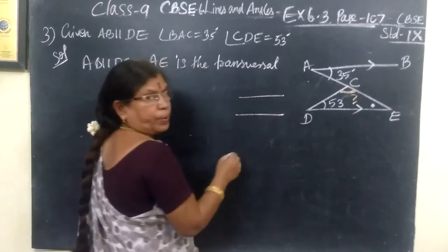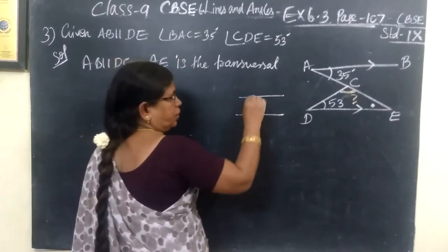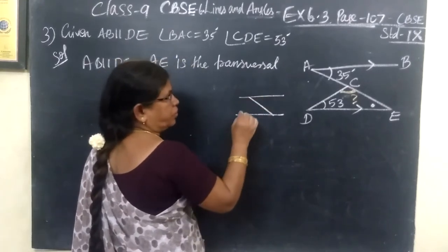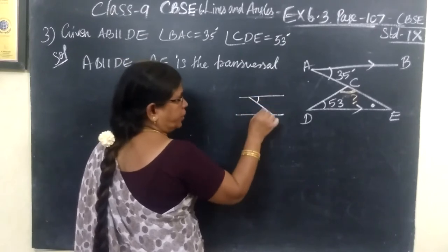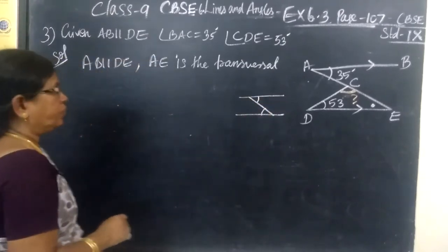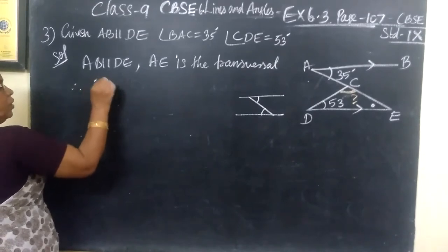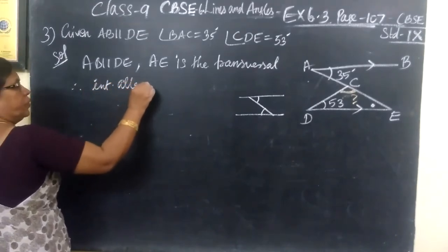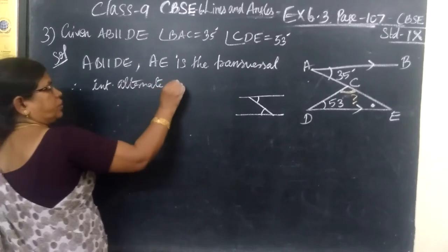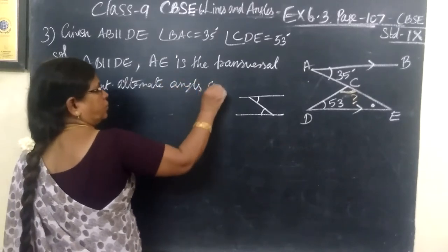If you have a pair of parallel lines and a transversal, you know the property: alternate angles are equal. Therefore, interior alternate angles are equal.